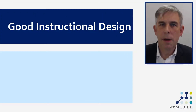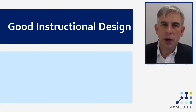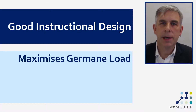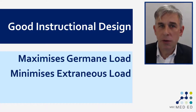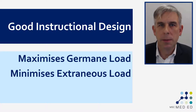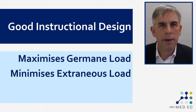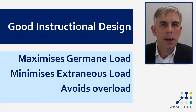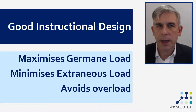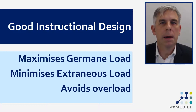According to cognitive load theory, good instructional design does three things: it maximizes germane load, making it easy for learners to focus on the things we want them to focus on; it minimizes extraneous load by stripping out as many sources of distraction as possible — many of those sources of distraction are things that learners don't have an awful lot of control over. Most importantly, cognitive load theory prioritizes strategies that avoid overloading working memory.